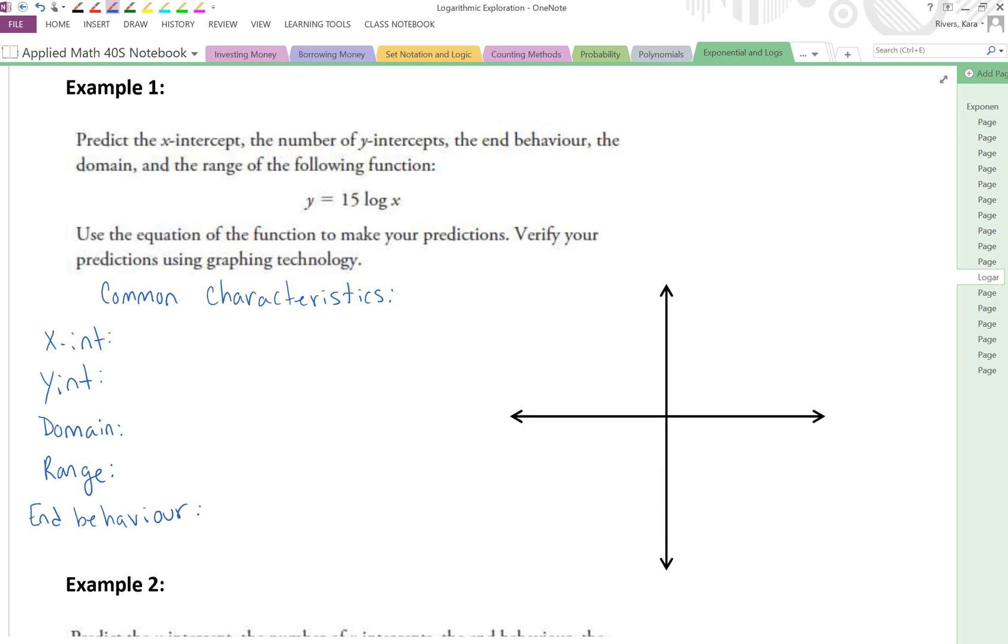For all of our logarithmic functions, we saw that if we had an a value, but our base was 10, our x-intercept was always 1. Now, for this one, because we've got a positive a value, we also know that this is going to be an increasing function, right? Because otherwise, it would have a negative in front.